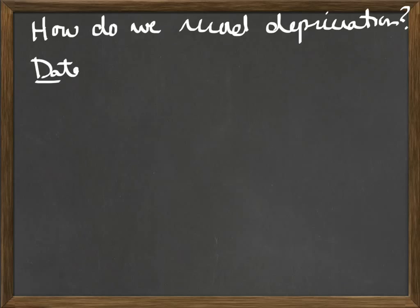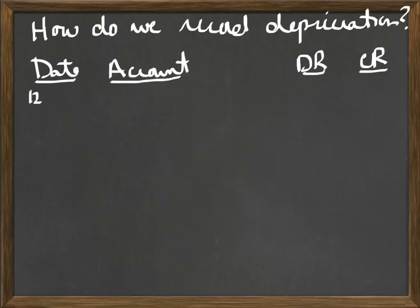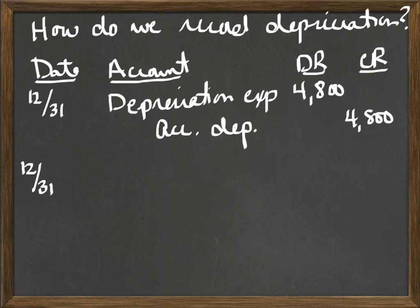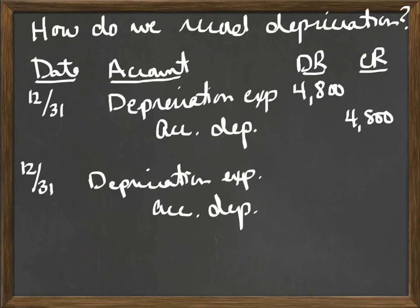Before we look at year 3, how would we actually record the depreciation? At the end of our year — or whenever we decide to record depreciation, which must be at least annual — we would debit depreciation expense. No matter what, whether it's straight line, units of production, or double declining balance, you always debit depreciation expense. In year 1, that was $4,800, and we would credit accumulated depreciation for the same amount. For year 2, it's always depreciation expense and accumulated depreciation — every time you record depreciation, that's your entry. But for year 2, we only calculated $2,880 in actual expense for that year.